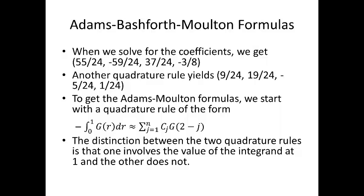Now, to get the Adams-Moulton formulas, we start with the quadrature rule of the form integral of 0 to 1, g r, dr, is approximately equal to the sum from j equals 1 to n, c sub j, g of the function g applied to 2 minus j. The distinction between the two quadrature rules is that the one that involves the value of the integral of 1, and the other that is not.